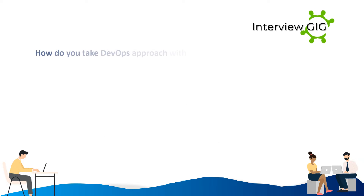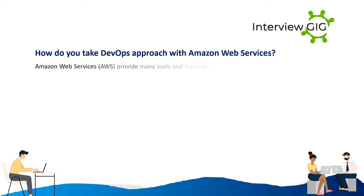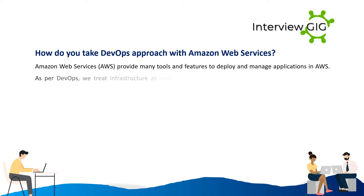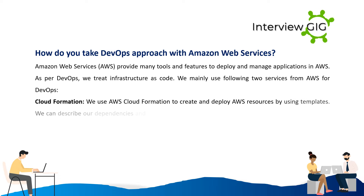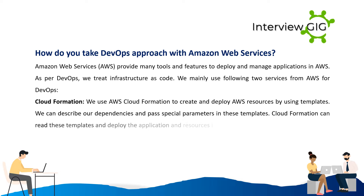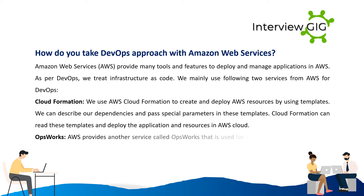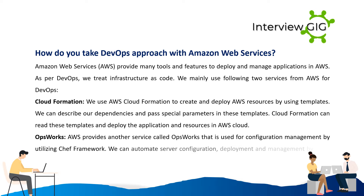To take a DevOps approach with Amazon Web Services (AWS), we treat infrastructure as code. We mainly use two AWS services for DevOps. First, CloudFormation: we use AWS CloudFormation to create and deploy AWS resources by using templates. We can describe our dependencies and pass special parameters in these templates, and CloudFormation can read them to deploy the application and resources in the AWS Cloud.